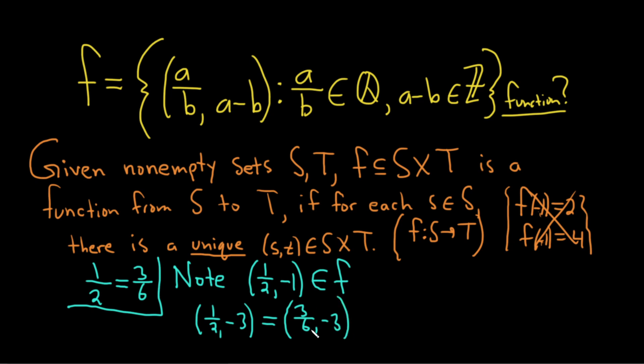And then this is an element of f, right? Because 3 over 6 is a rational number. 3 minus 6 is negative 3. So this is an element in f.